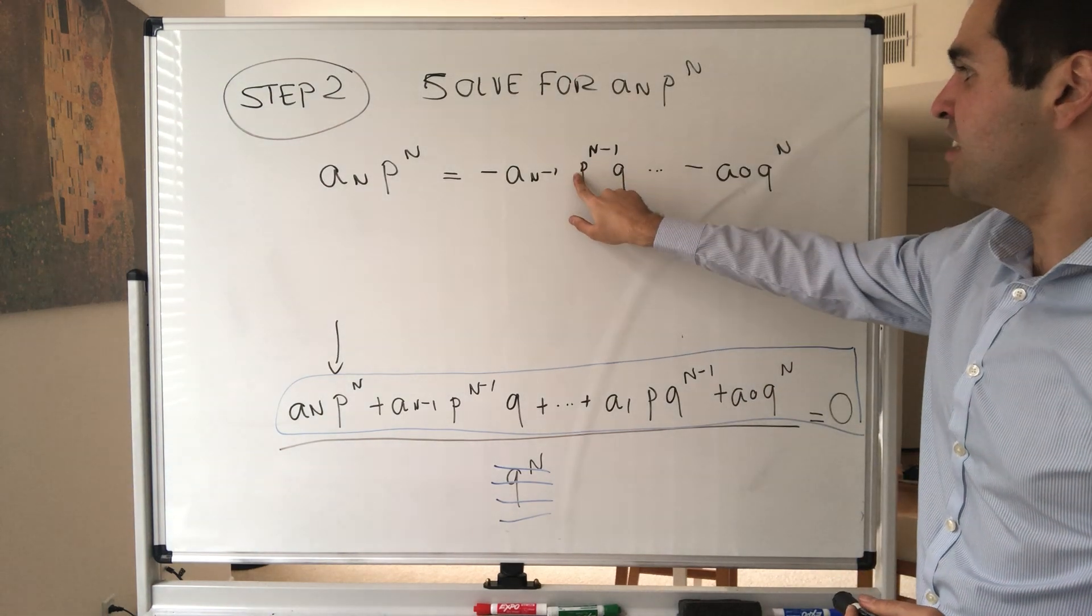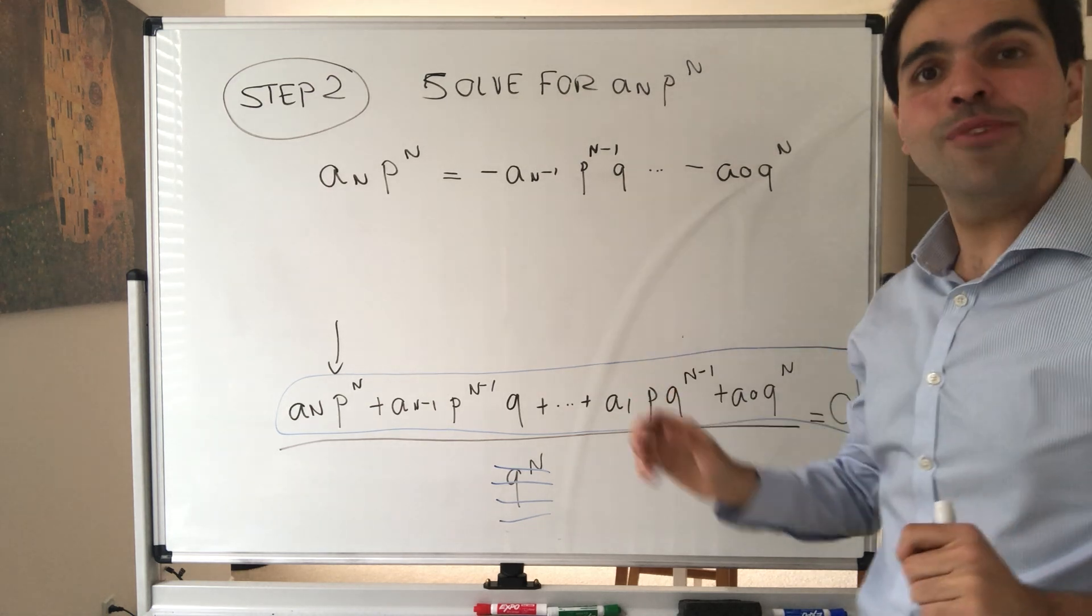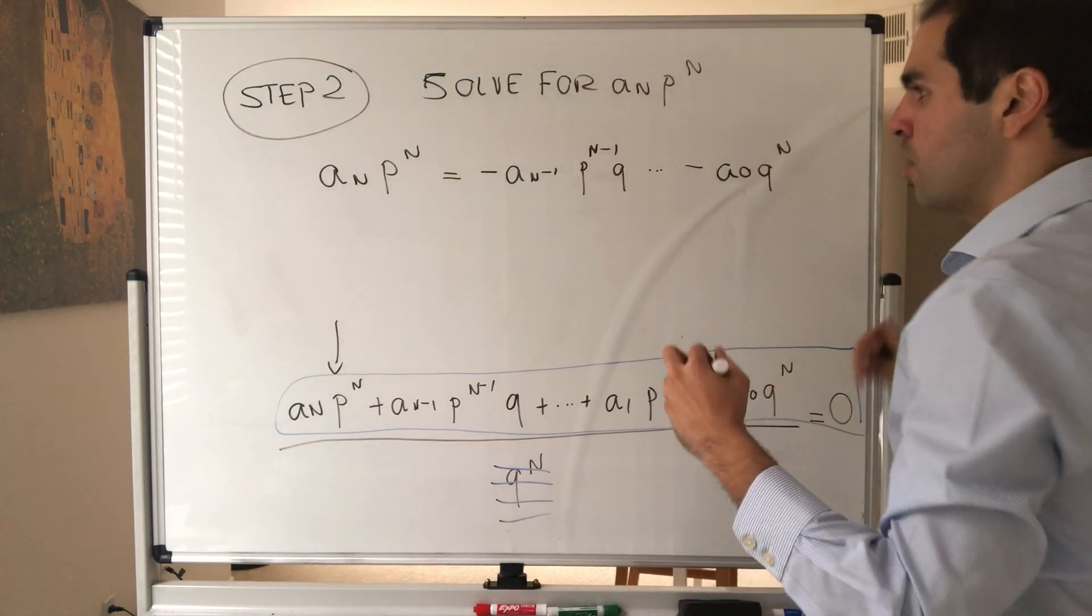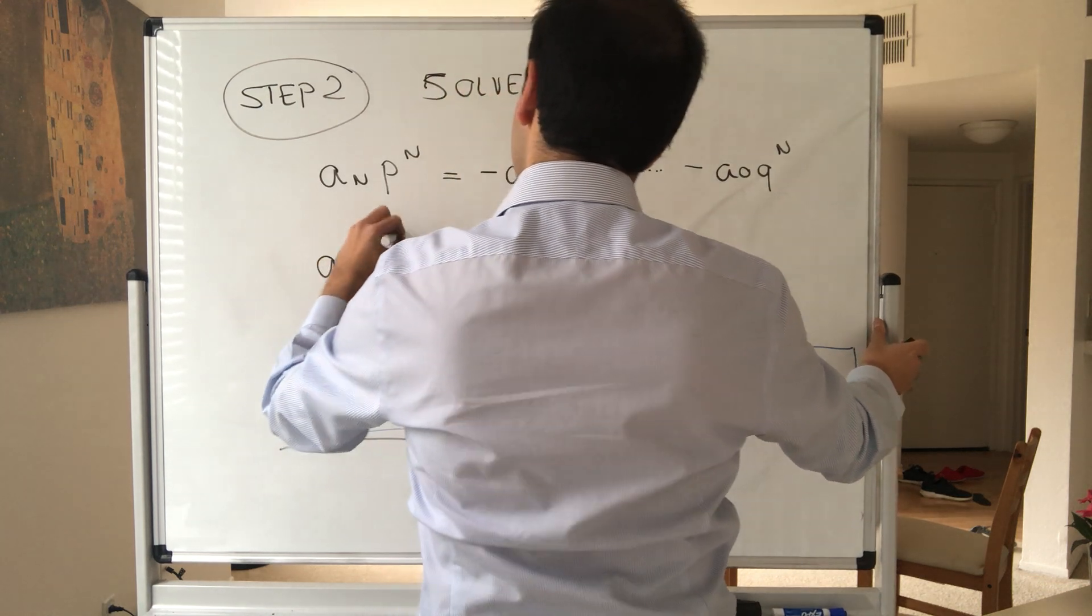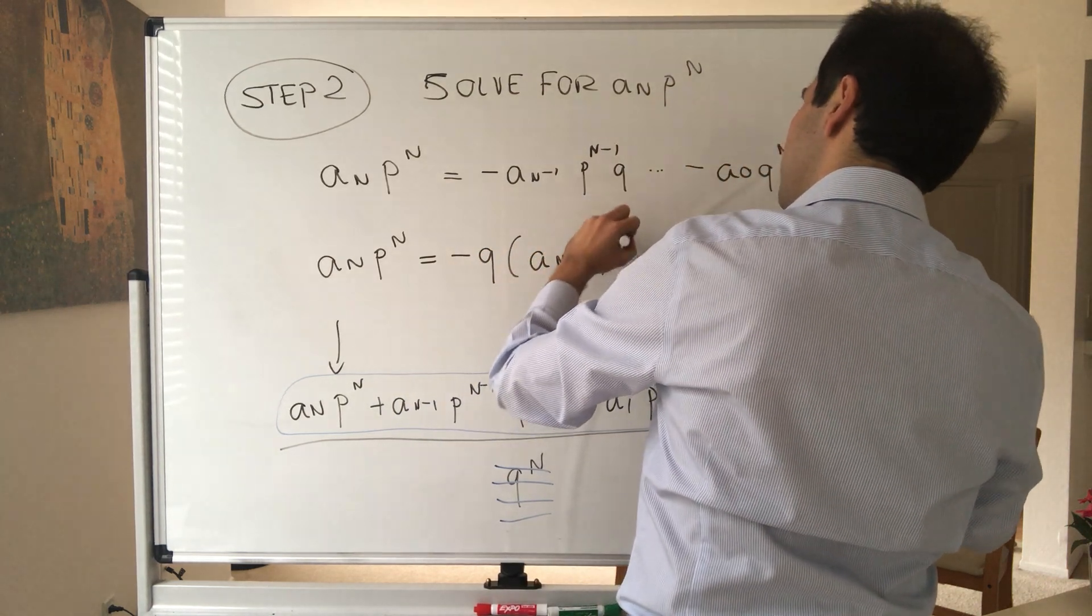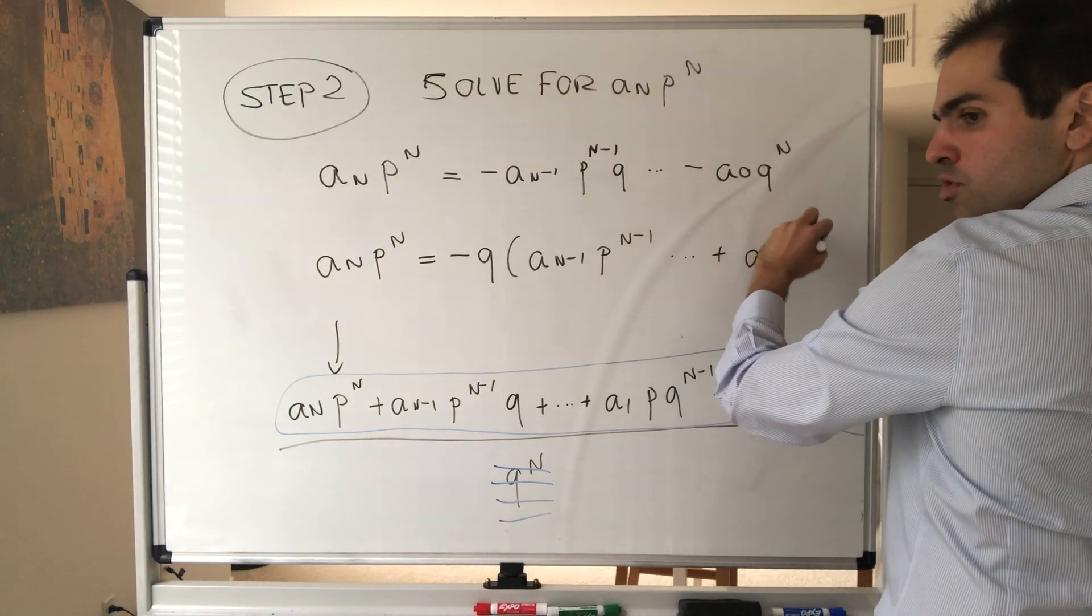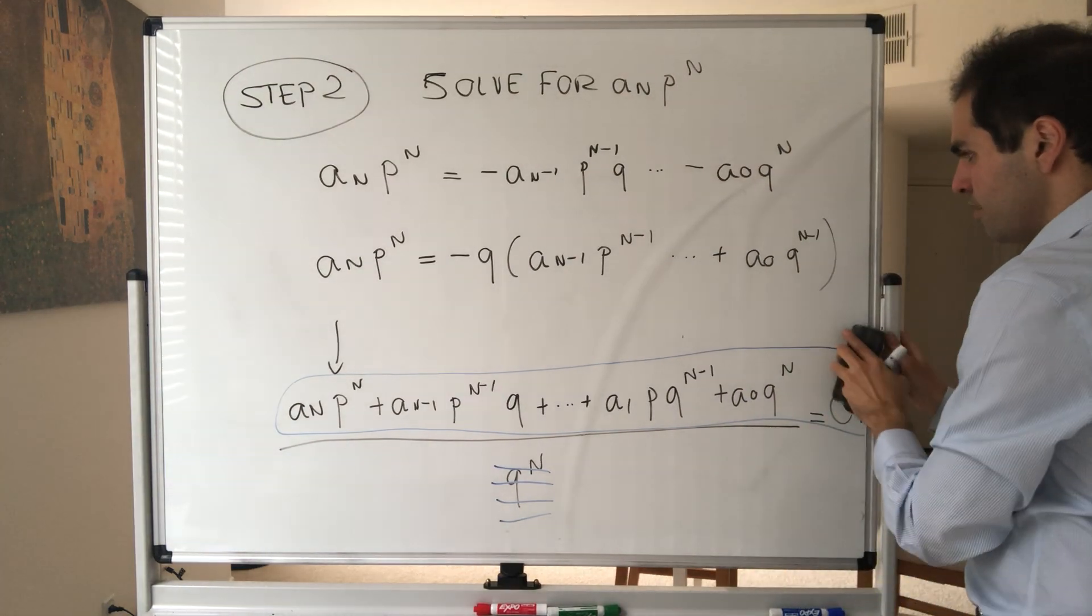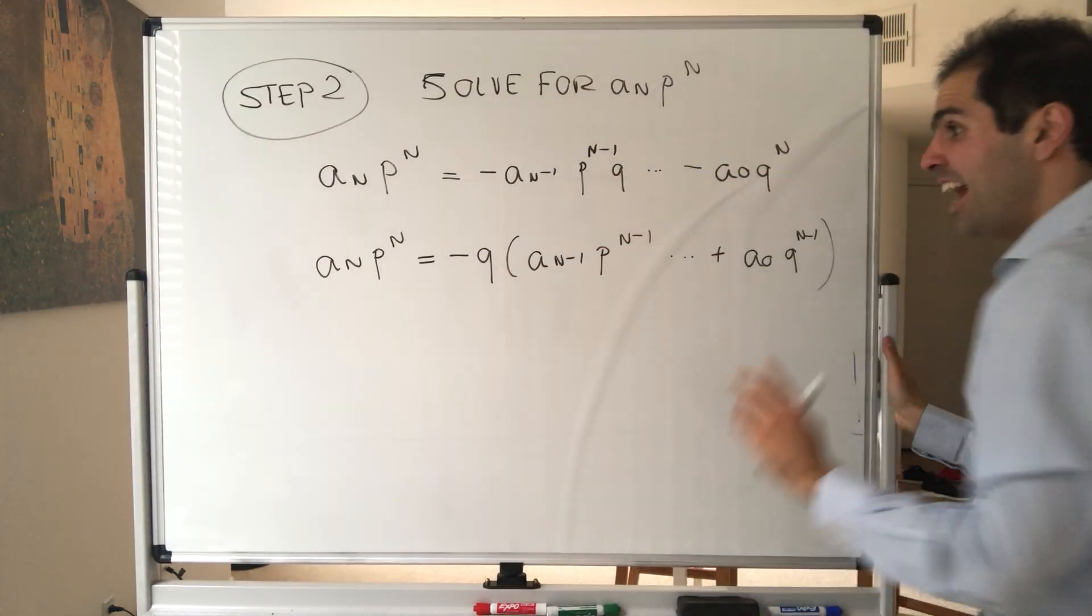And notice what's nice here is in all those terms there's a factor of q in common. That's why we did it. We want to isolate the term without q and we want to put all the other terms with q on the right-hand side. So what you're left with is a_n p^n equals minus q times (a_(n-1) p^(n-1) dot dot dot plus a_0 q^(n-1)).